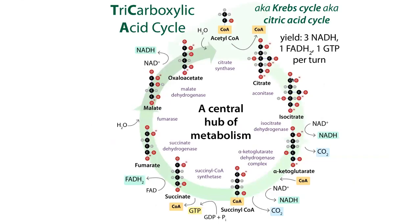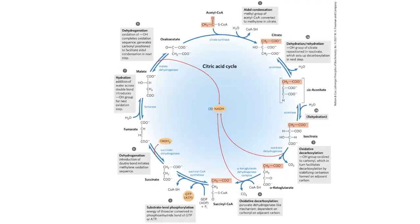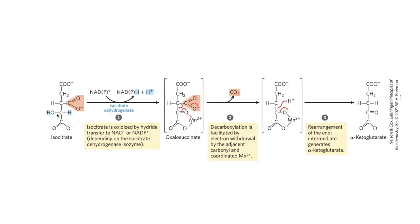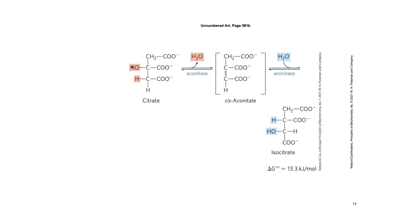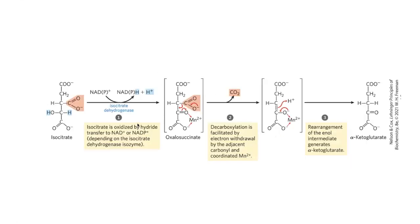If we look at citrate versus isocitrate: in citrate we have the OH group on the central carbon, and in isocitrate we've moved it. If we oxidize this hydroxyl group, we end up with a beta-keto acid — it's alpha-beta to the carboxylic acid — and that would be easier to lose. Aconitase went from a tertiary alcohol (hard to oxidize) to a secondary alcohol (easier to oxidize). When we oxidize it, we end up with a beta-keto acid, and beta-keto decarboxylation is favorable.